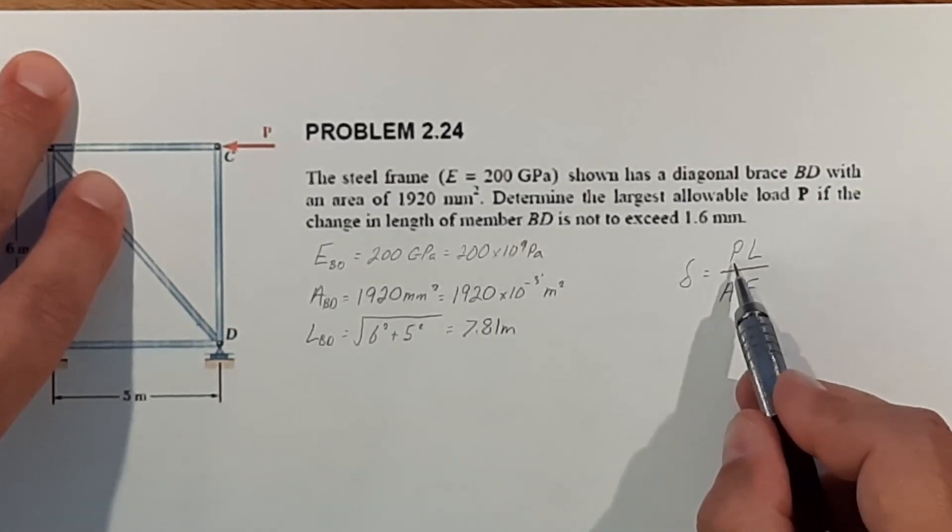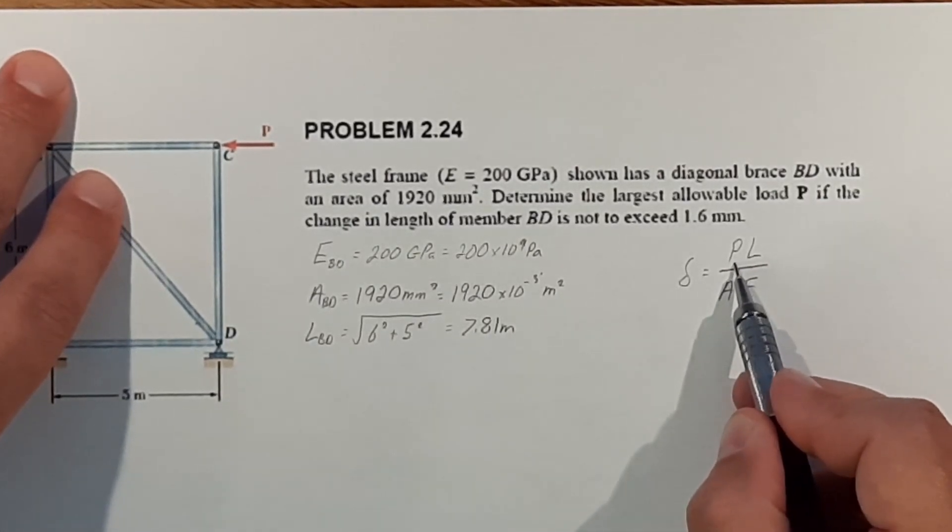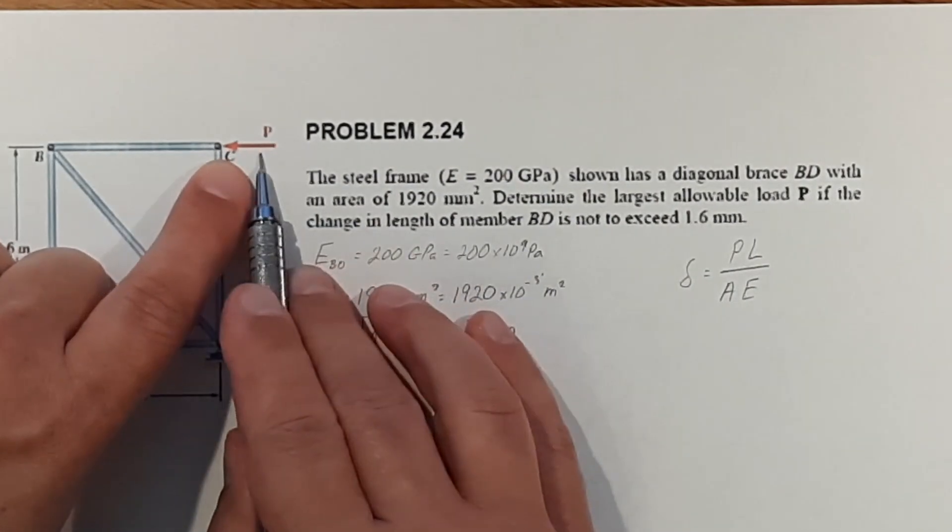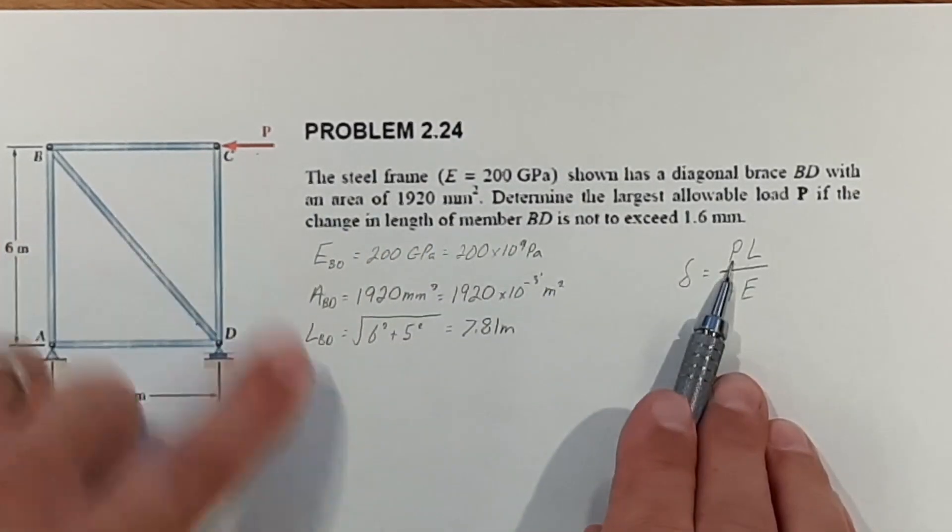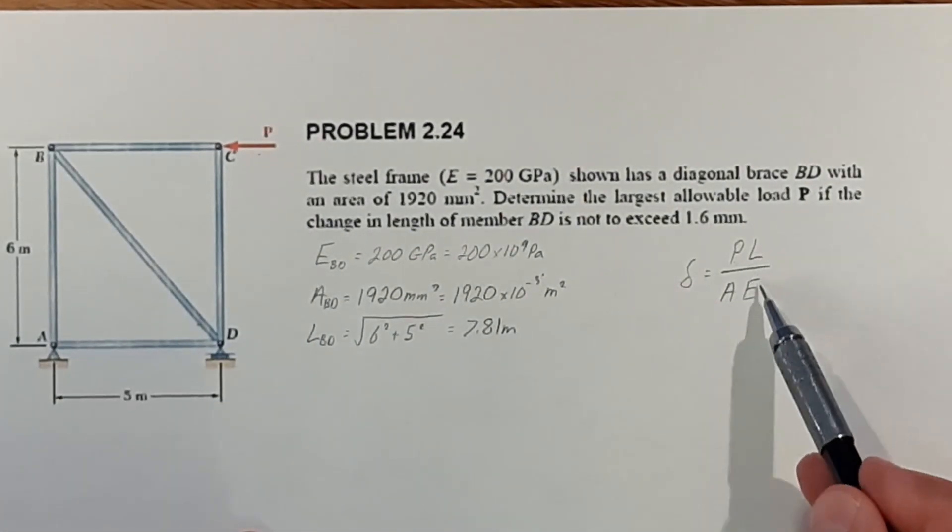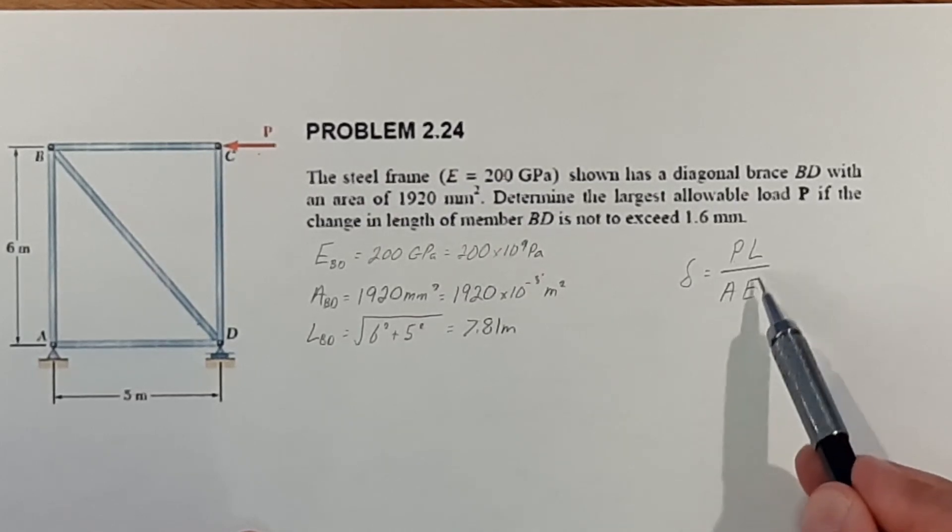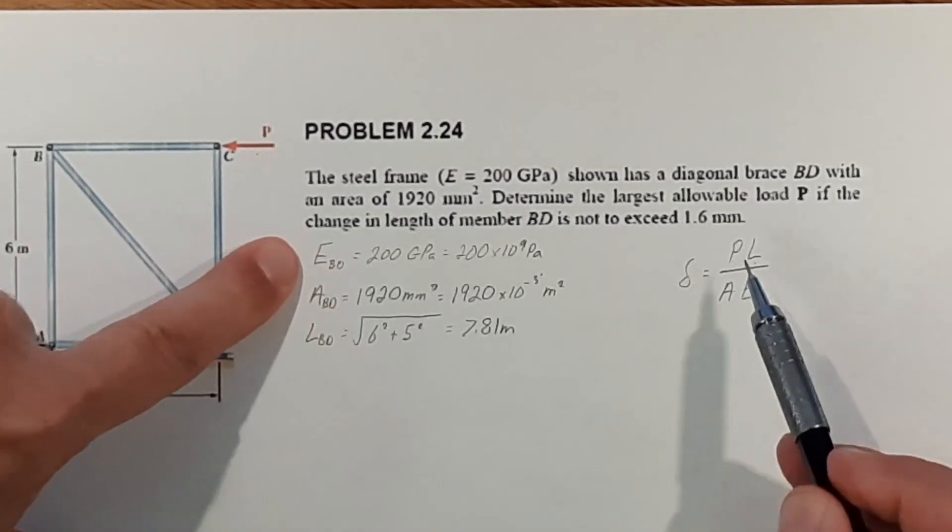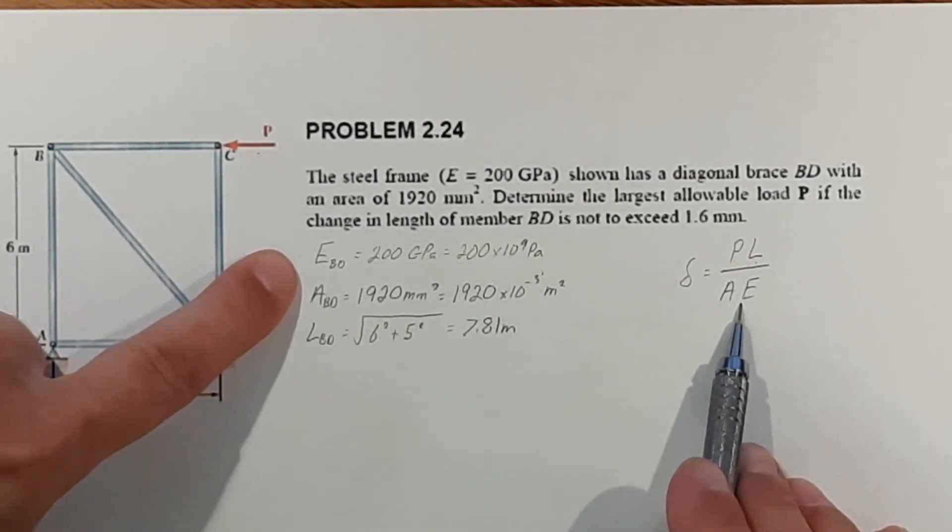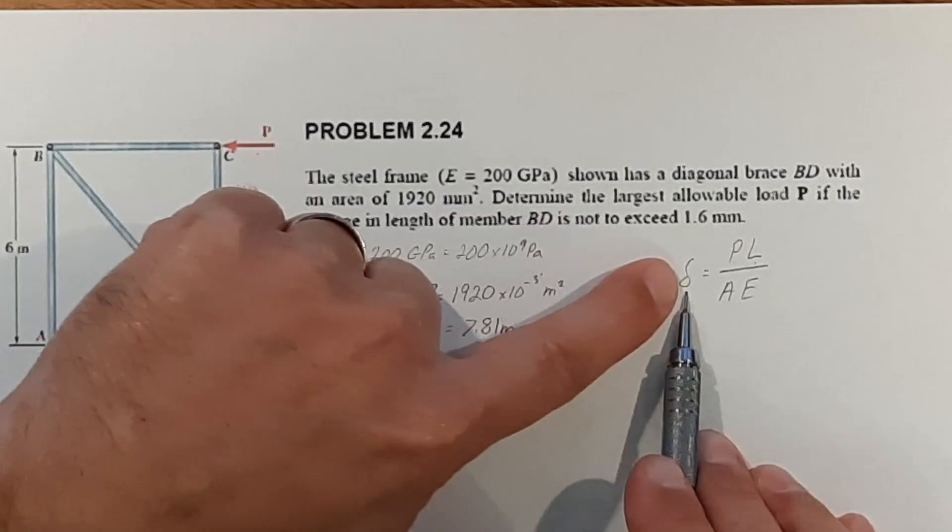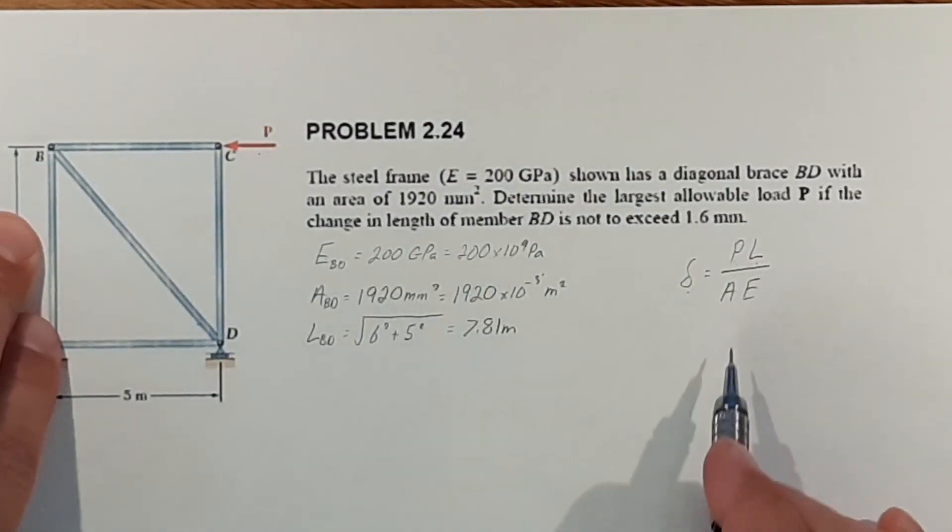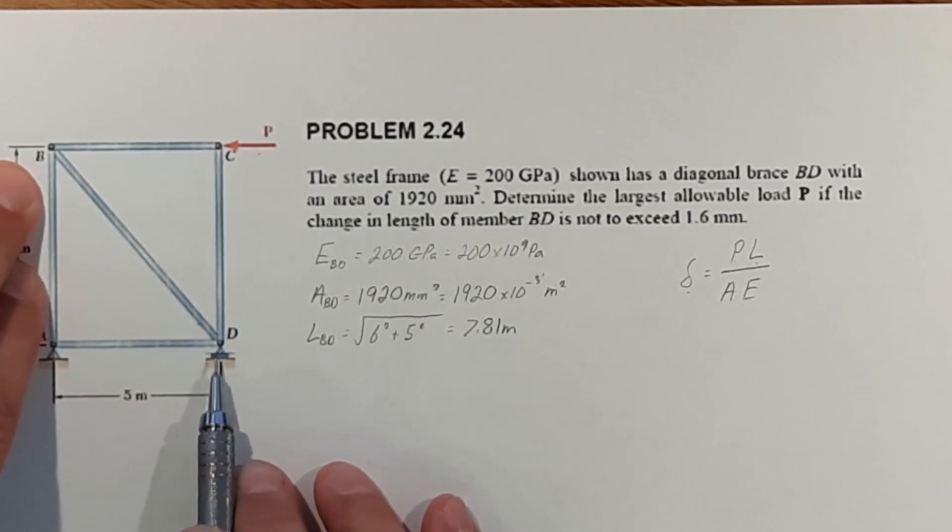We know all this information except for P. Now this P isn't going to be directly related to the P we're looking for. This P is going to be the force in the member that these values are pulled from. So all the values we have - we have L, we have A, and we have E, and we have our change in length given here of 1.6 millimeters - are all from member BD.